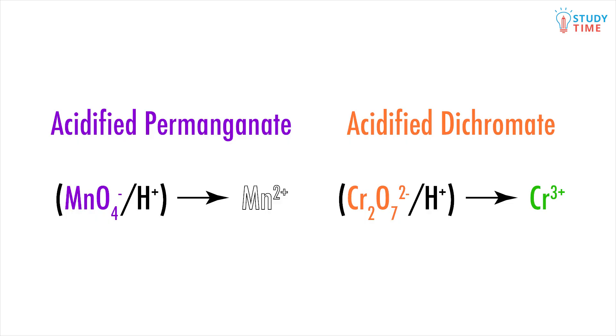The oxidant you're given will be acidified permanganate, which is purple, or acidified dichromate, CR2O7 2- over H+, which is orange. MnO4-, the acidified permanganate, will be reduced to colorless Mn2+, while CR2O7 2-, the acidified dichromate, will be reduced to green CR3+.